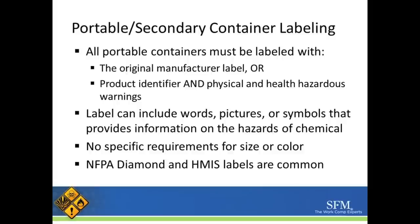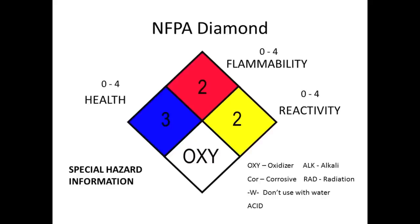The NFPA diamond and HMIS labels are common. The NFPA diamond is shown on the screen. It has a blue square which impacts your health, red indicating how flammable the chemical is, and yellow showing how reactive it is. It also has a special hazard information section located in the white square.